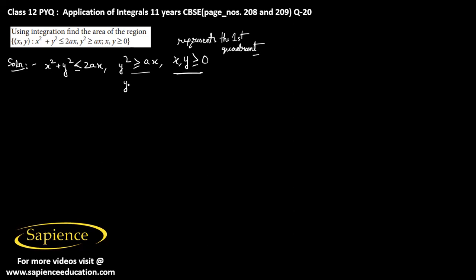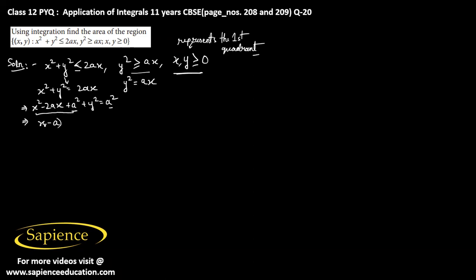The equation y squared equals ax is the equation of a parabola, and x squared plus y squared equals 2ax is the equation of a circle. We can rewrite this as x squared minus 2ax plus a squared plus y squared equals a squared, adding a squared on both sides to convert it into a perfect square. This gives us x minus a whole squared plus y squared equals a squared.